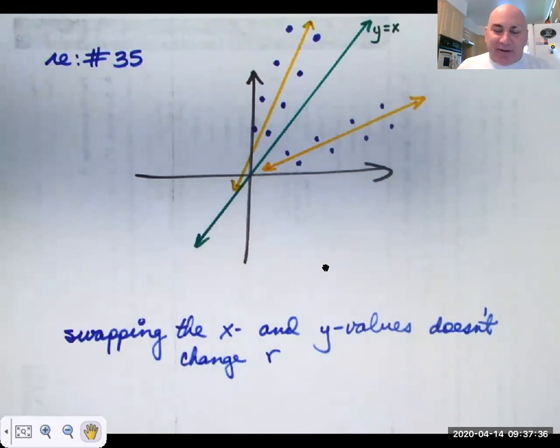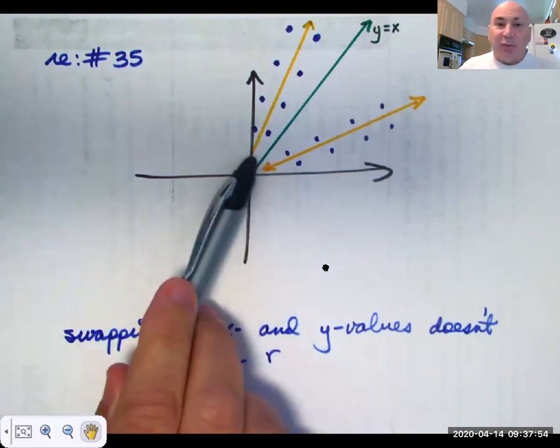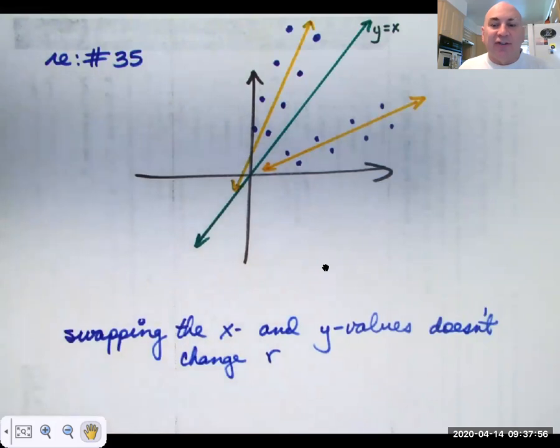You can think of it as far as calculating r. If you swap the x and y values what it was the z sub x value becomes the z sub y. What was the z sub y becomes the z sub x. When you multiply them you get the same number. So r doesn't change. The regression line does and the slope of the regression line does but the r value itself doesn't change.